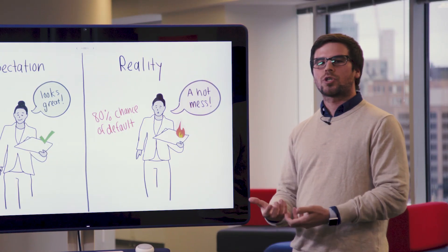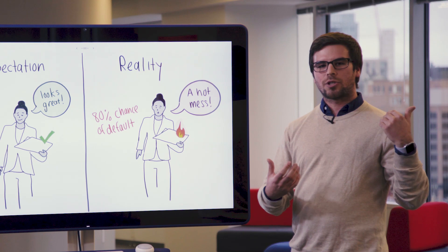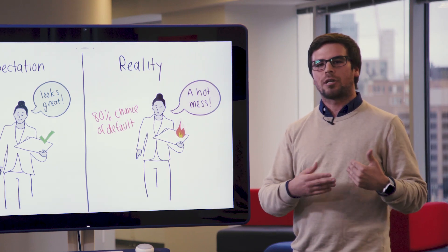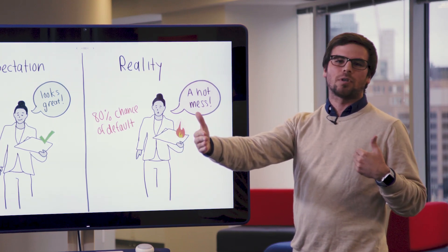This is problematic because we're trying to predict the chance of default at time of application, not say 90 days after the loan has already been issued. So we need to be very careful in these situations to ensure that we don't include information from the future when we're trying to predict information that's occurring in the past.